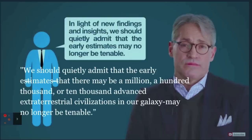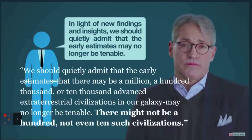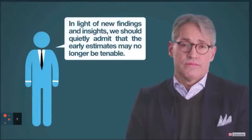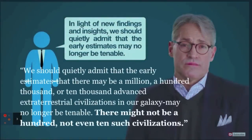PragerU also chopped off the next line of Schenkel's quote: There might not be a hundred, not even ten, such civilizations. The mashed-up misquote makes it appear as though Schenkel's dismissing the idea of life in the universe, whereas in fact he's simply reducing the estimates for intelligent life, not life, in our galaxy, not the universe, from hundreds of thousands to perhaps hundreds or just ten.